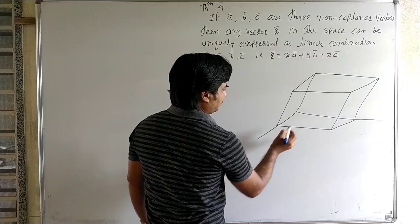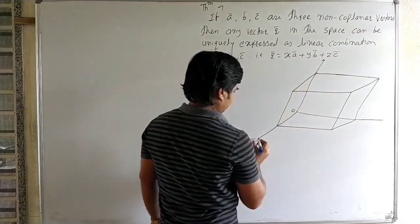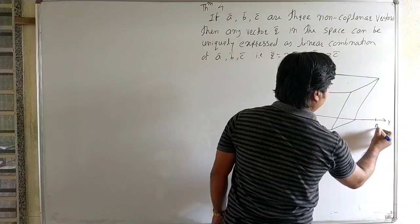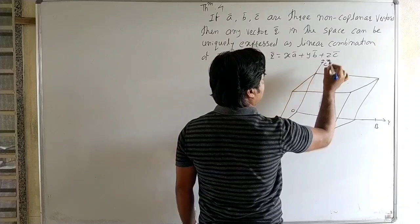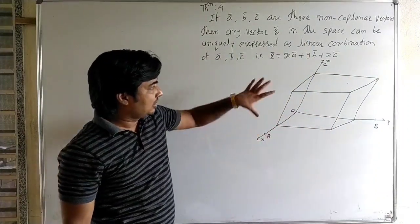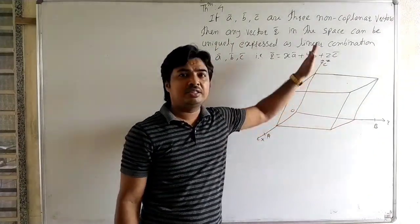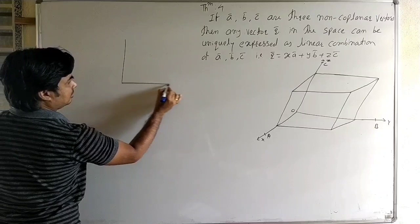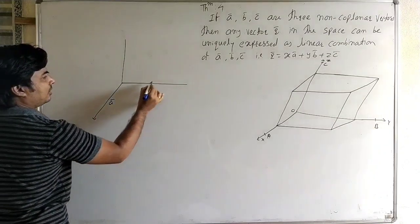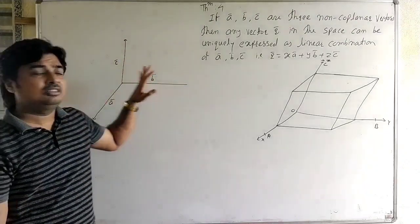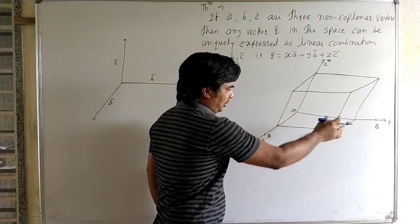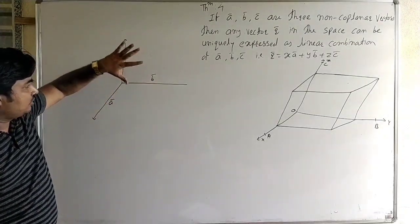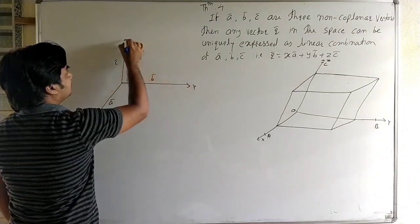Suppose this is the origin. This is the x-axis, therefore here point A — that is OA — is a-bar. It is the y-axis, point B, OB-bar. It is the z-axis, point C — OC — it is vector c-bar. Here we are given three vectors a-bar, b-bar, and c-bar, and these three vectors are non-coplanar.